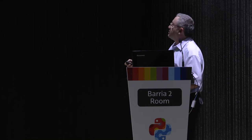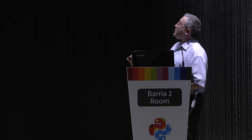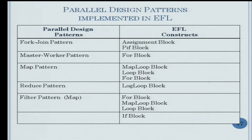We will now focus on how we implement parallel design patterns in EFL. We will talk about the fork-join pattern and the EFL constructs that allow its implementation; the master-worker pattern with the for block; the map pattern with three alternatives — map loop, loop block, and for; the reduce pattern; the filter pattern; and an if block construct that is useful but not connected to any specific pattern.